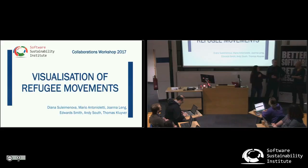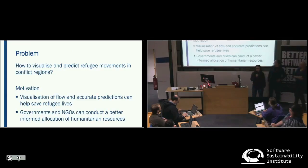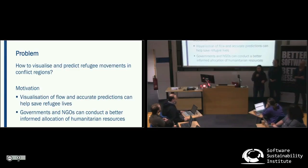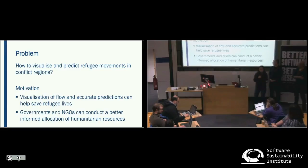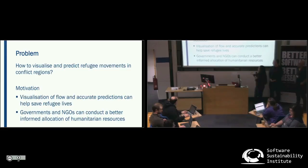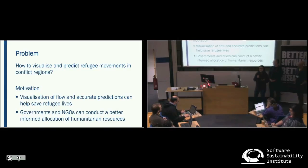It's Mario, Andy, Edward, and Thomas. To start with, we investigated the problem of visualizing and predicting refugee movements in conflict regions. This is my PhD research topic, and I was able to get code and predict the numbers of populations. However, I didn't have a tool to visualize everything and map it as a network map. The motivation behind this is to visualize the flow and accurately predict refugee movements in order to save lives, as well as help governments and NGOs conduct informed allocation of resources.